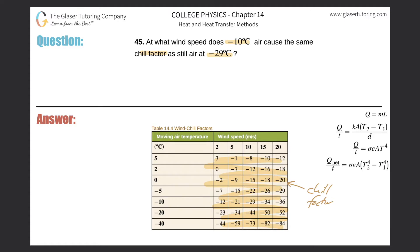This column over here will represent the moving air temperature. So basically it says the moving air temperature in this problem is negative 10 degrees Celsius.